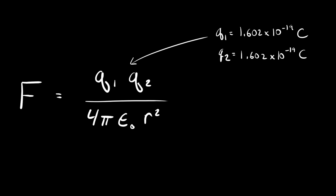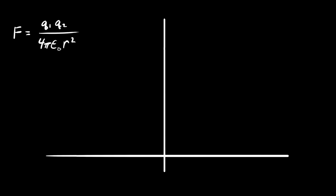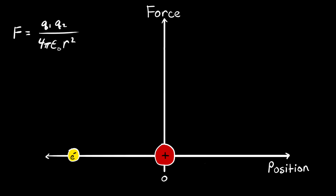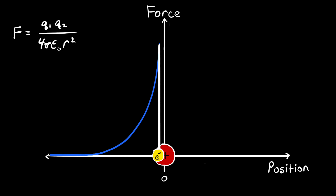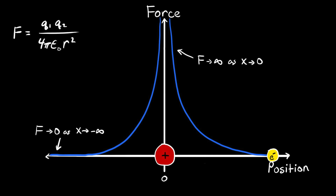The force of attraction is given by a formula where Q1 and Q2 are the charges of the proton and electron, and epsilon-naught is a fundamental constant of the universe. The only variable that can change is r, which is the distance between the proton and the electron. We can graph force on the y-axis versus electron position on the x-axis with the proton fixed at center. When the electron is far away, the attraction is very weak, but as it gets closer to the proton, the force increases dramatically. The force drops to zero at large distance and goes to infinity as the distance approaches zero.